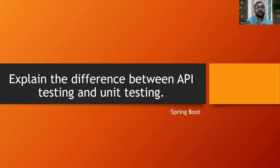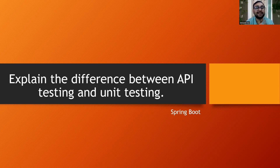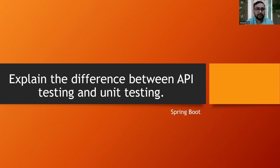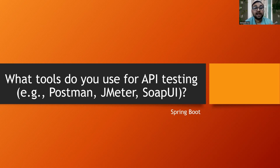Explain the differences between API testing and unit testing. From Postman you can do API testing directly. For integration testing you can use Cucumber, which helps do end-to-end testing with features and step definitions. Unit testing involves mocking everything and checking whether specific functionalities are called, and how many times methods are invoked. So Cucumber is for integration/end-to-end testing, while Mockito-based unit testing is purely a mocking framework.